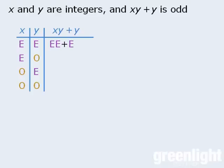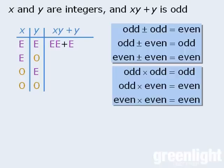For the first case, we'll replace the x's and the y's with e to show that they are both even. To evaluate this, we'll apply our rules regarding even and odd numbers. In this first case, we have an even number times an even number, which is even, and then to this we add an even number, which will result in an even number. So for the first case, where x and y are both even, the expression xy plus y evaluates to be even.